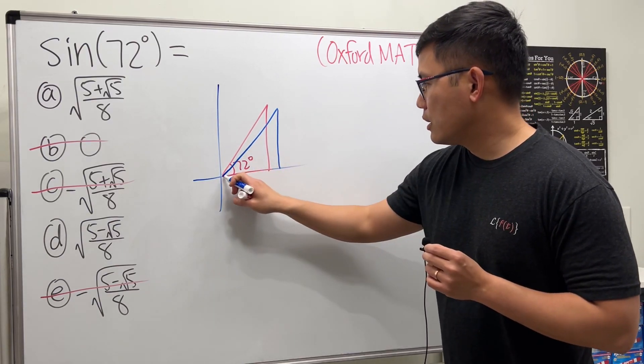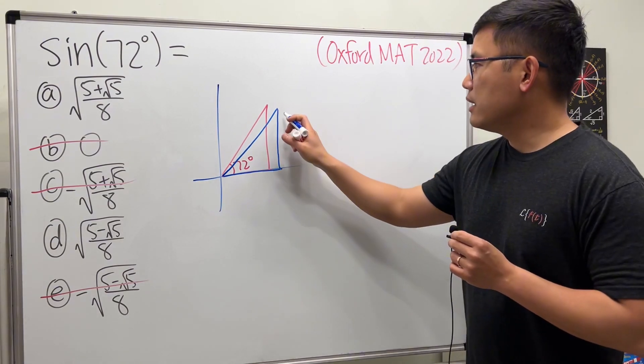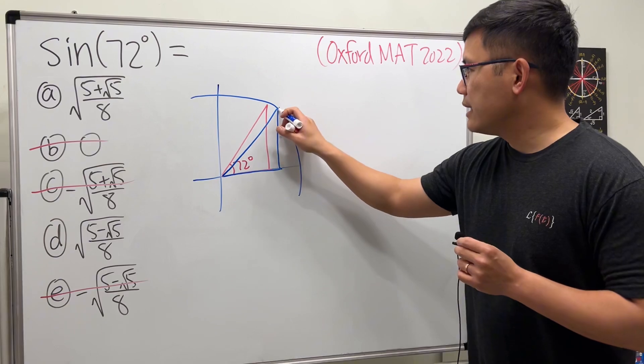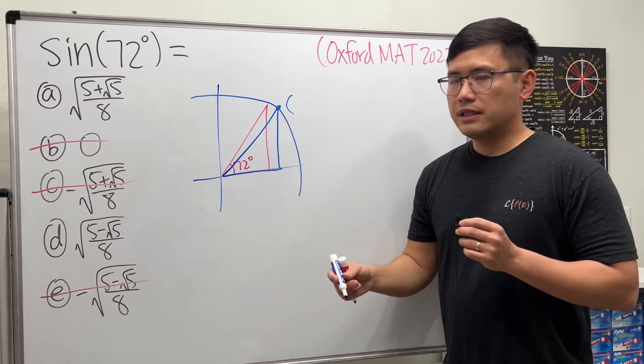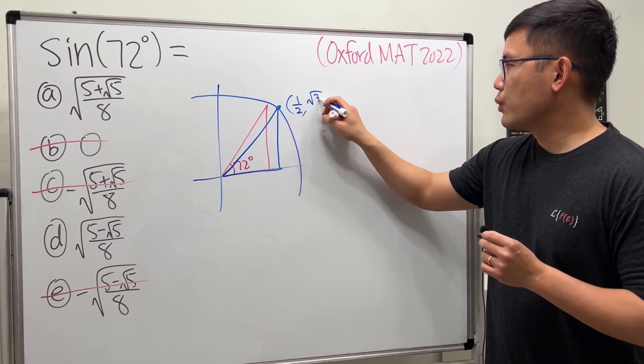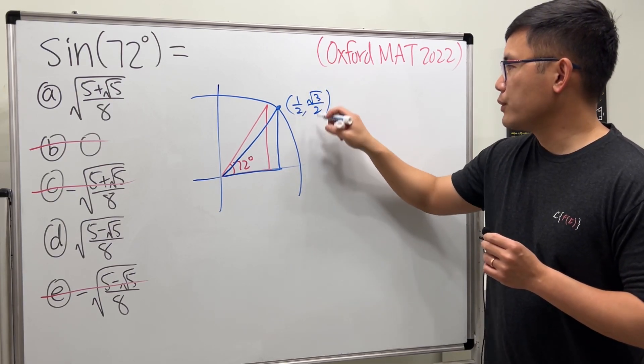So imagine you have put a 60 degree angle right here, so it's going to be slightly lower. And again, if you imagine we have a unit circle, then this point here is going to be sin(60°), which is 1/2 here, and then √3/2. So the sine value here is...